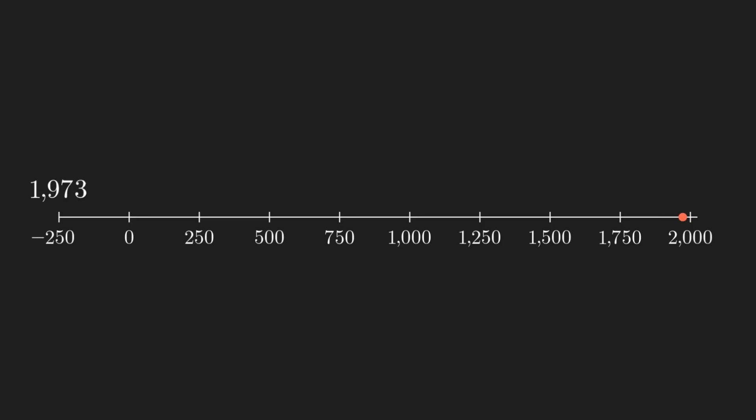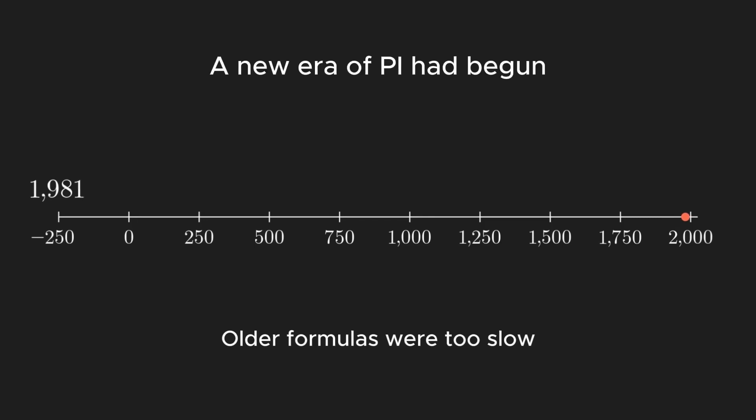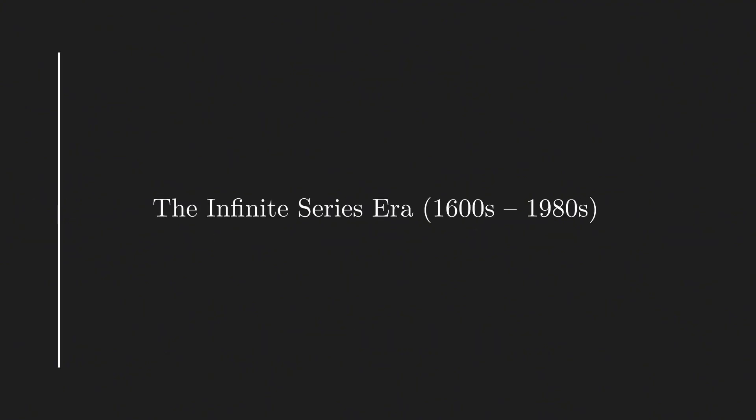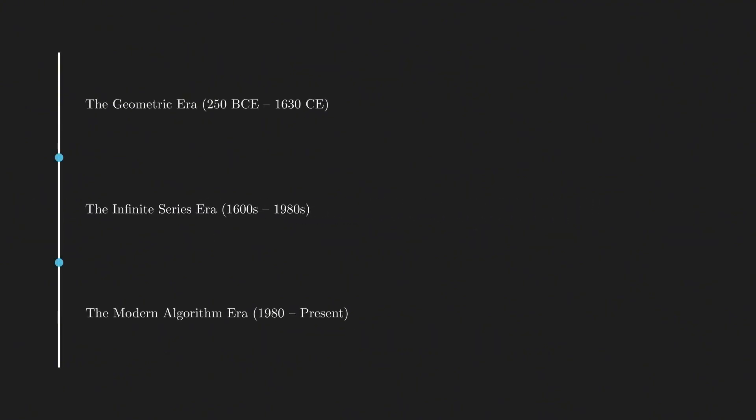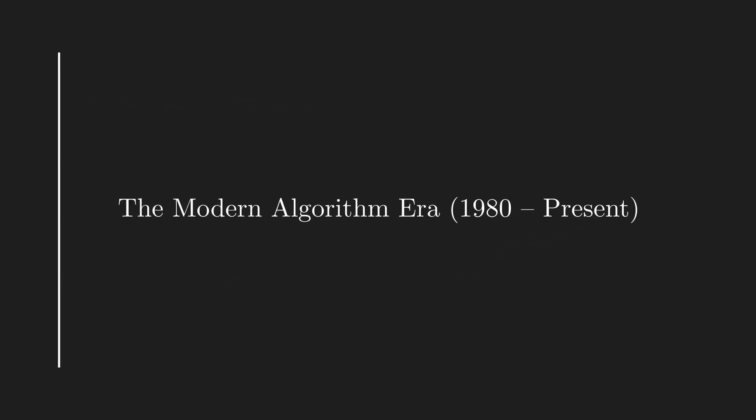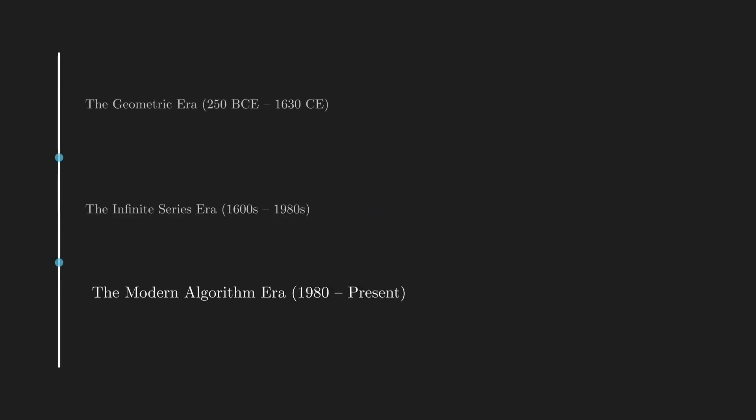In 1973, computers pushed past 1 million digits. 1980s, mathematicians realized older formulas were too slow for the modern computers. A new era of computation had begun. We are currently in the third era of Pi calculations. It began around 1980, when mathematicians discovered how to utilize a combination of three independent developments.